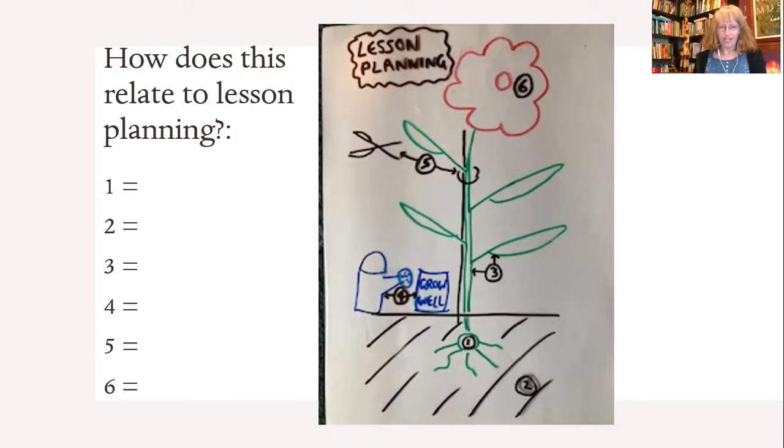Number four is the watering and the fertilizer. Five is the cutting back, the pruning. And number six is the flower.